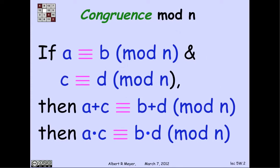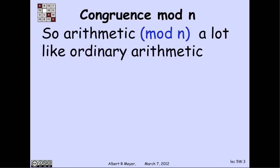So first of all, we've already observed that we have these basic congruence rules, that if a ≡ b (mod n) and c ≡ d (mod n), then a+c ≡ b+d (mod n), and a·c ≡ b·d (mod n). So that's the sense in which arithmetic mod n is a lot like ordinary arithmetic. But here's the main difference.